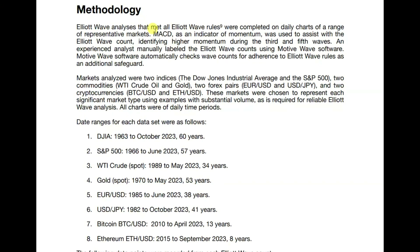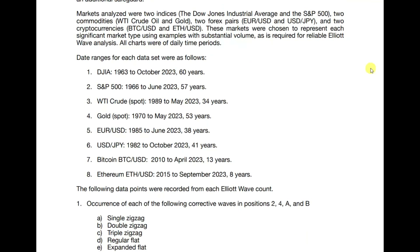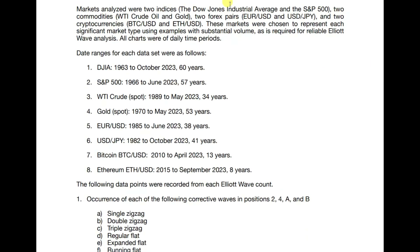All of our Elliott Wave counts were checked by multiple analysts and also by the Motive Wave software, which ensures all wave counts meet Elliott Wave rules as additional safeguards. Our data consisted of two of each type of market: indices, commodities, Forex pairs, and cryptocurrencies — specifically the Dow Jones Industrial Average, the S&P 500, WTI Crude Oil, Gold, EUR/USD, USD/JPY, Bitcoin, and Ethereum.